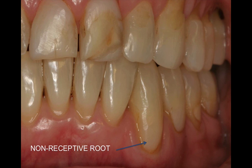The exposed root surface can't be restored. This is an example of a non-receptive root with a class 5 composite restoration — so you need to remove it. Don't forget that the root surface is avascular. There's no blood supply coming from the root, but you can get attachment to the root if you make the root receptive.